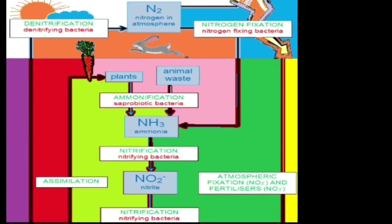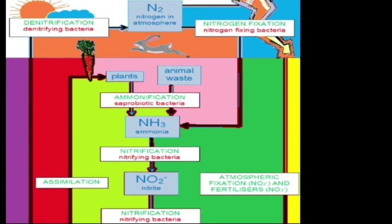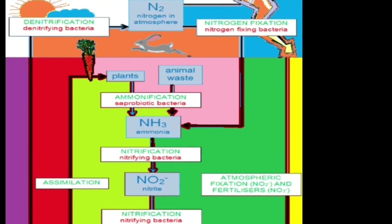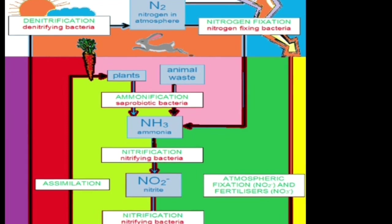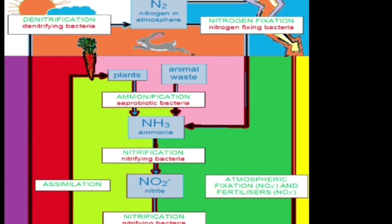Let's have a look at the nitrogen cycle in a nutshell. Nitrogen in the atmosphere falls to the Earth by precipitation such as rain or snow. Once in the soil, it finds its way to bacteria on the root nodules of plants. At the roots, nitrogen is combined with hydrogen to make ammonia in a process called nitrogen fixation. Lightning in the atmosphere can also do this work.